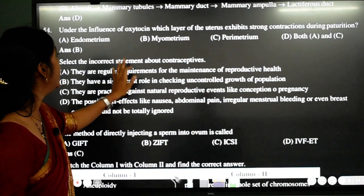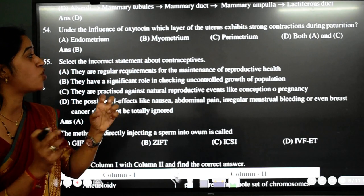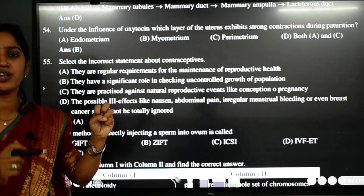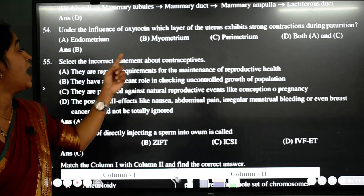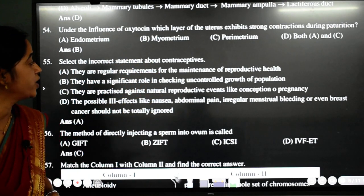54th question. Under the influence of oxytocin, which layer of the uterus exhibits strong contraction during parturition? See, these are the contractions which will lead to the delivery of the baby. And the layer which gets contracted is nothing but myometrium.